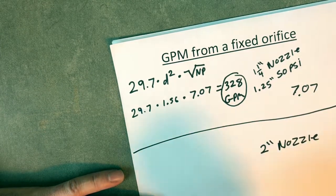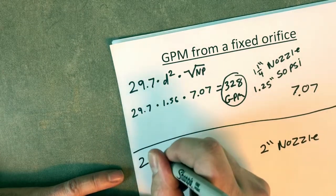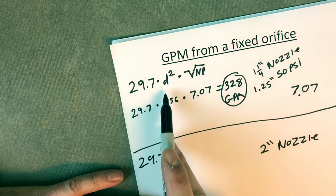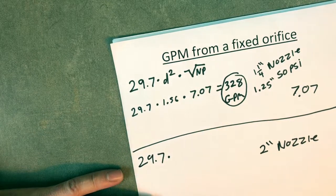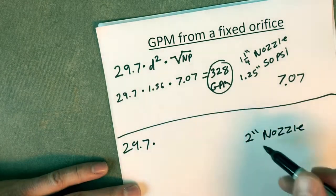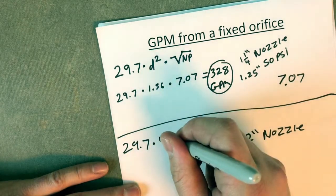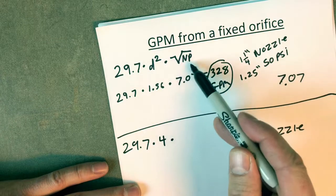Let's go through it. 29.7 times the tip diameter squared, 2 times 2. So we're going to go 4, times the square root of our nozzle pressure.